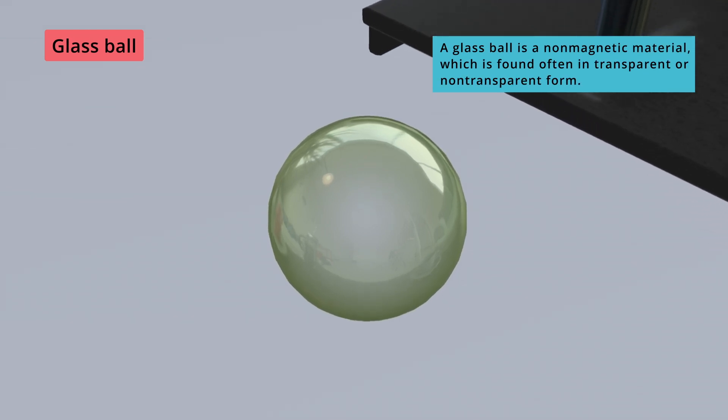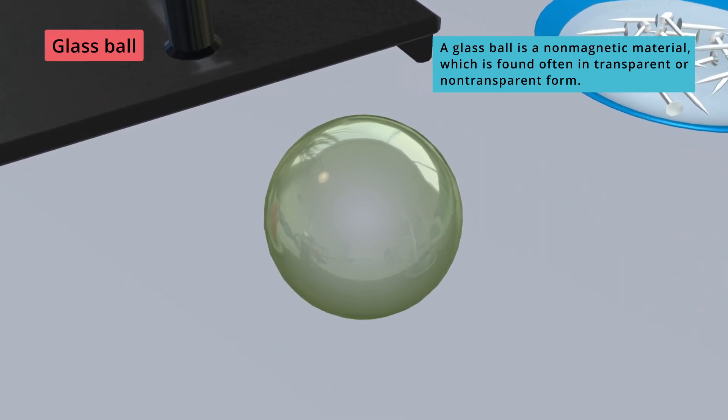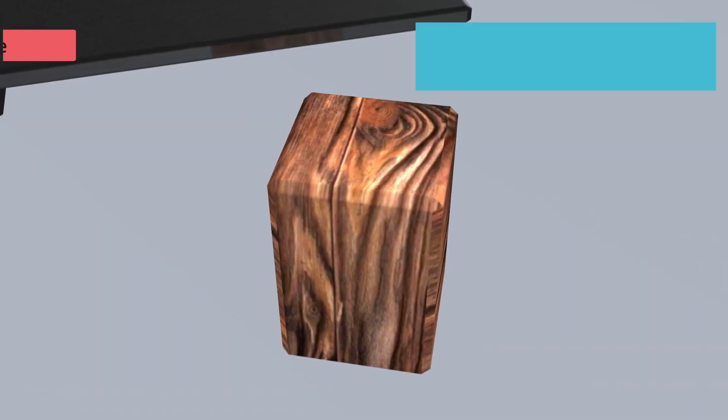Glass ball. A glass ball is a non-magnetic material which is found often in transparent or non-transparent form.